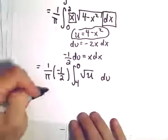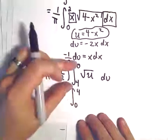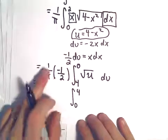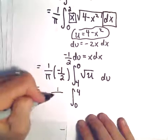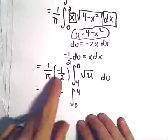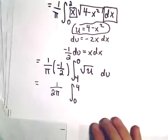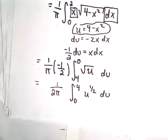Recall, though, you can flip the limits of integration, 0 to 4. You can just flip the integral, but you change the sign out front. So instead of having a negative, once we flip the limits of integration, this will become positive. So instead of negative 1 over 2 pi, we'll have positive 1 over 2 pi. And then we're just integrating u to the 1 half, so that's not too bad.